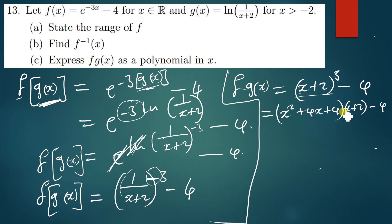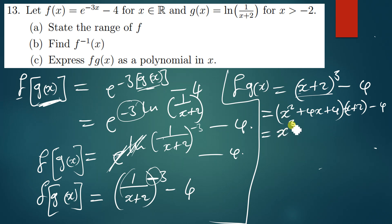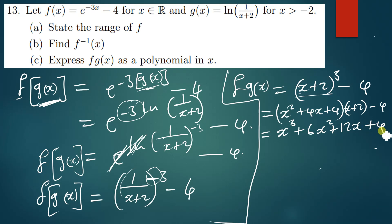When you expand (x+2) cubed you get x squared plus 4x plus 4 times (x+2), and expanding further gives x to the power 3 plus 6x squared plus 12x plus 4. So this is what you get after the expansion.